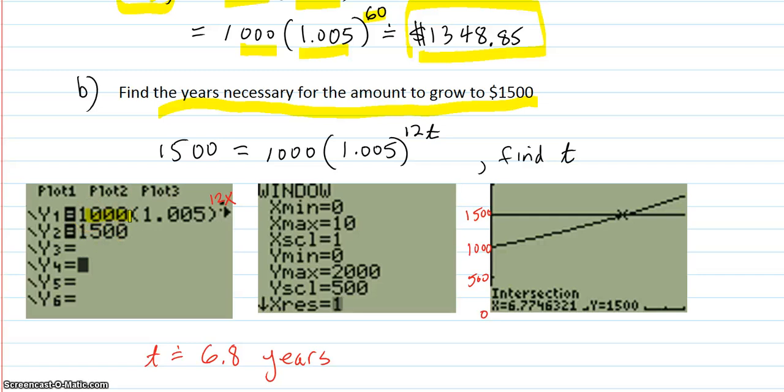Put the function 1,000, 1.005 to the 12x goes in there. It didn't show because it ran off the screen. And we want it to grow to 1,500. So I put the 1,500 line. Had to mess with the window a little bit. But I know I'm going to at least 1,500. So I have to go beyond that. So I went to 2,000. Marked it off with five hundreds. And so this is the curve. That's the function. Here's the 1,500 line. They intersect right here.